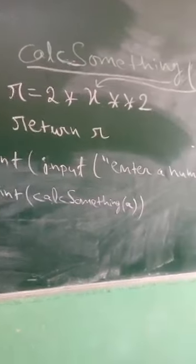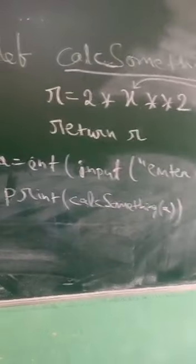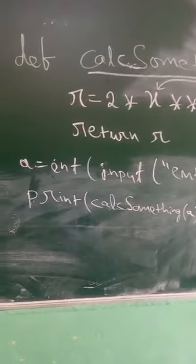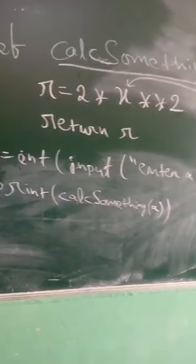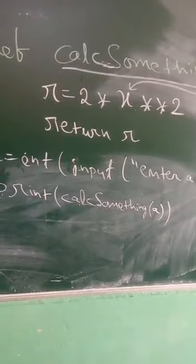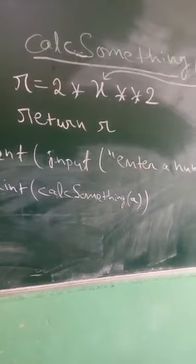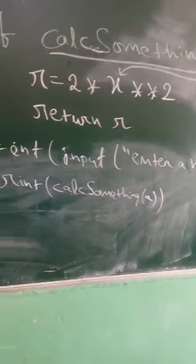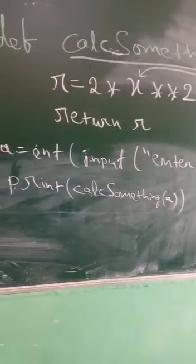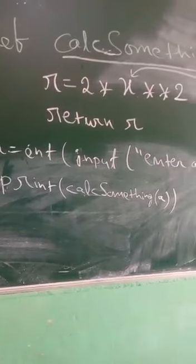For example, suppose the user has given 2. So what will happen? The value of A will be 2. When we send the value 2 to calc_something, the value of x will be 2. So here, 2 power 2 is 4, and multiplied by 2 that is 8. So this program, if you run it in Python, will give you the result 8.